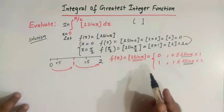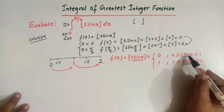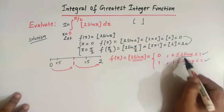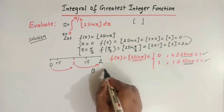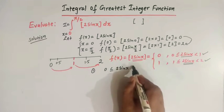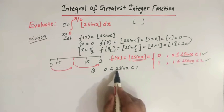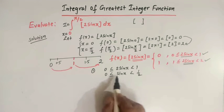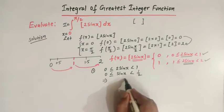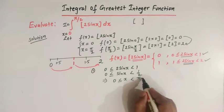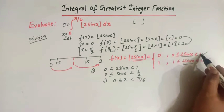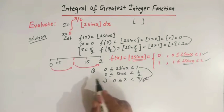Now we solve these two inequalities for x. The first inequality is 0 ≤ 2sinx < 1. Dividing throughout by 2: 0 ≤ sinx < 1/2. When sinx lies between 0 and 1/2, x lies between 0 and π/6, because sin(π/6) = 1/2.